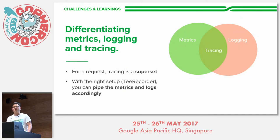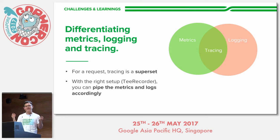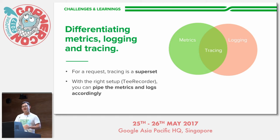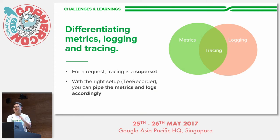Once you start writing traces for many functions, you'll notice you have a line of code for tracing, a line for logging, and a line for metrics — that's a lot of instrumentation code. In my personal opinion, tracing is actually a superset of metrics and logging in the context of a request. With the right setup like ours, you can transparently pipe your logs and metrics to your existing systems and have just one line of tracing code instead of three different setups.